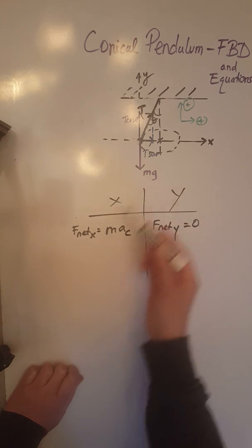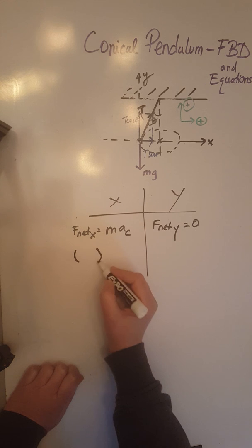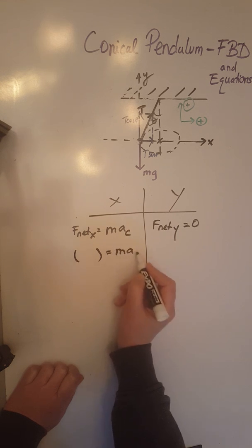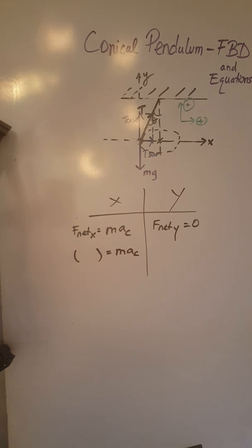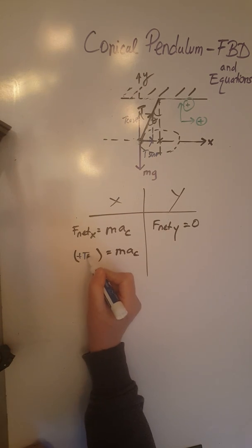Let's go ahead and develop these equations a little bit more. For F net x, we only have one force and it's positive, equals m ac, and that one positive force is my T sine theta in blue, so plus T sine theta equals m times the centripetal acceleration.